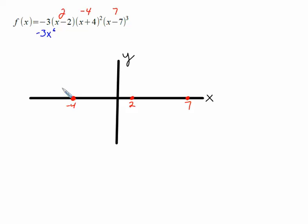So when we go to look at the end behavior, we have negative three x to the sixth. Even exponent means that it will be going in the same direction. Negative out front means that it's going to be going down to both the left and the right.